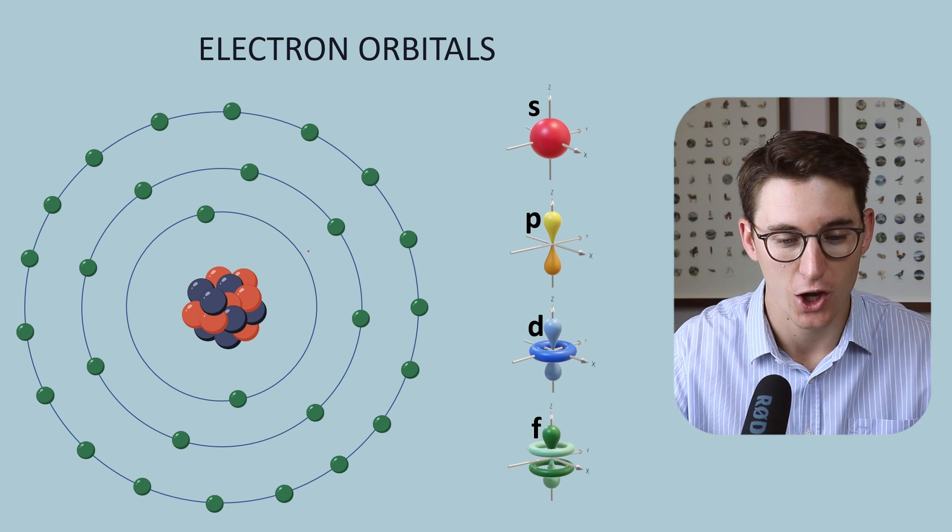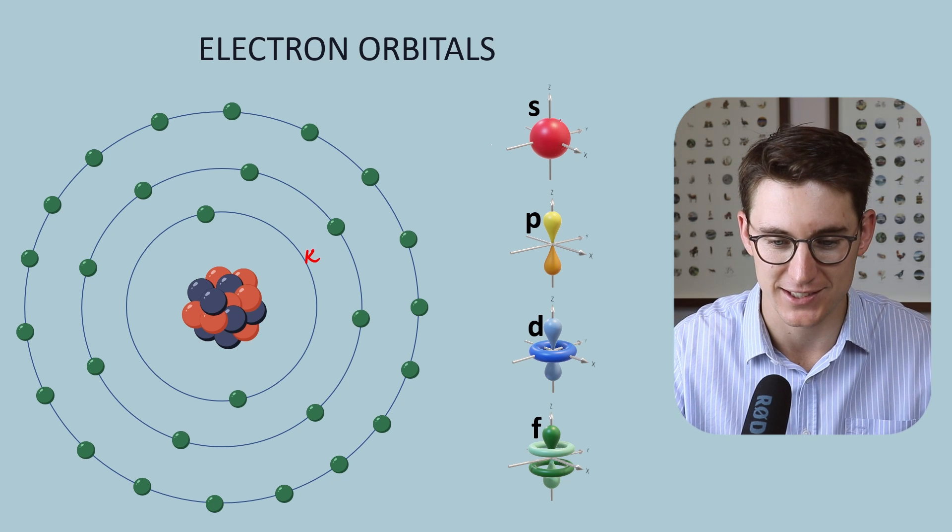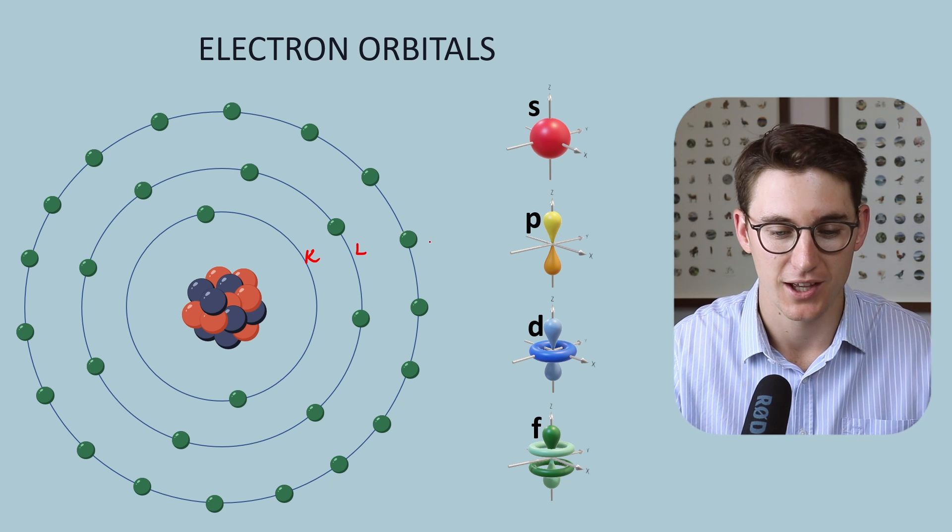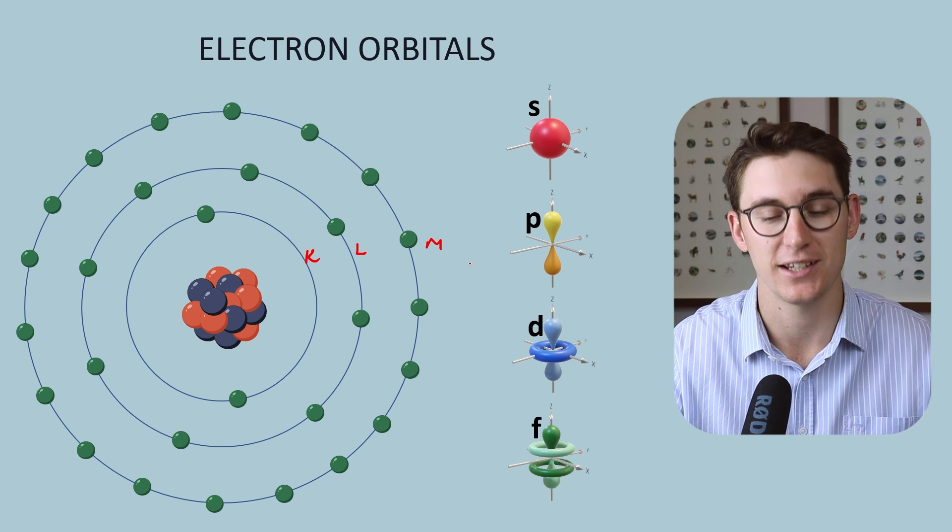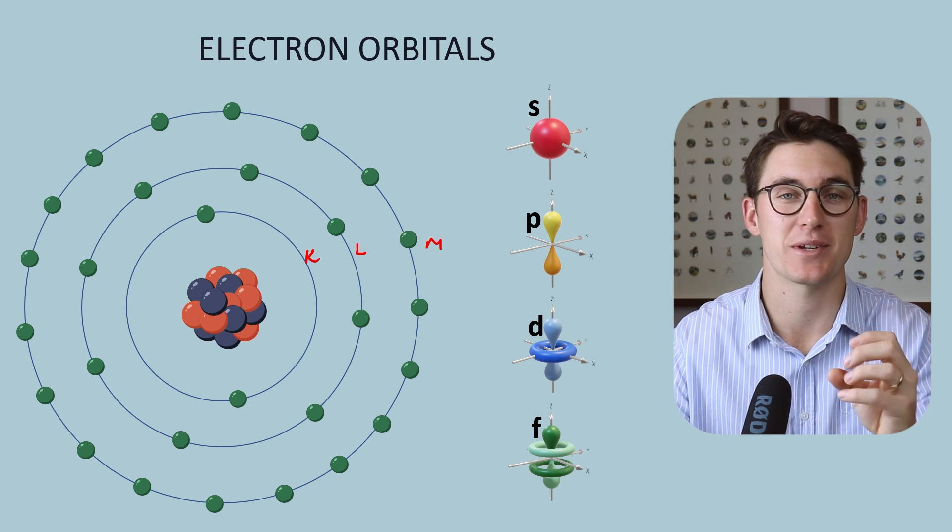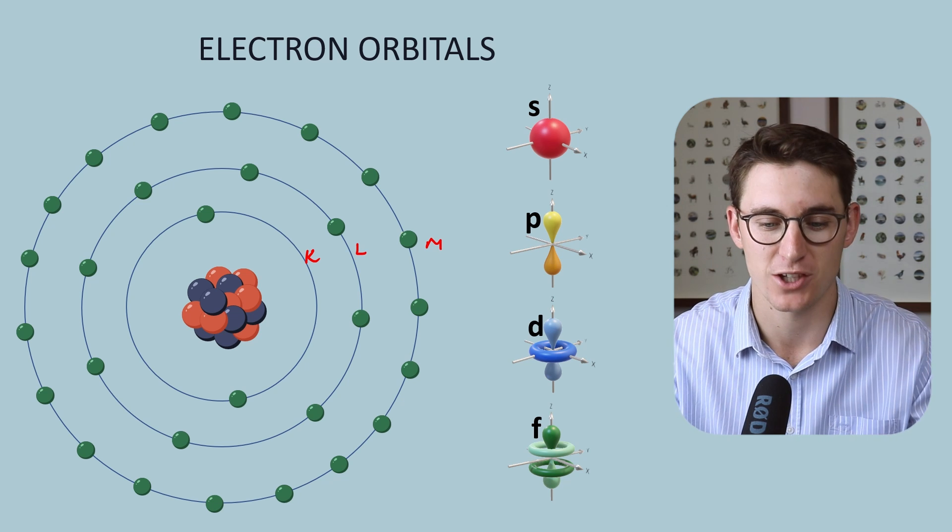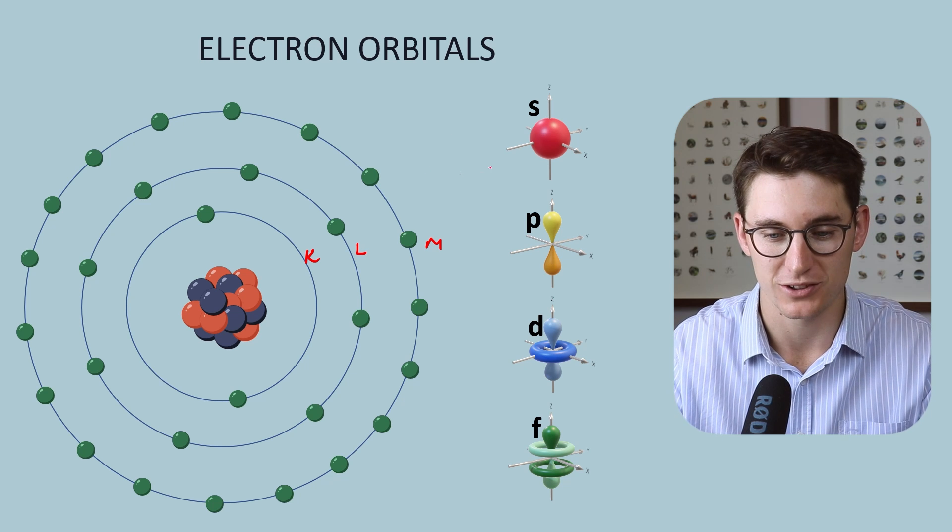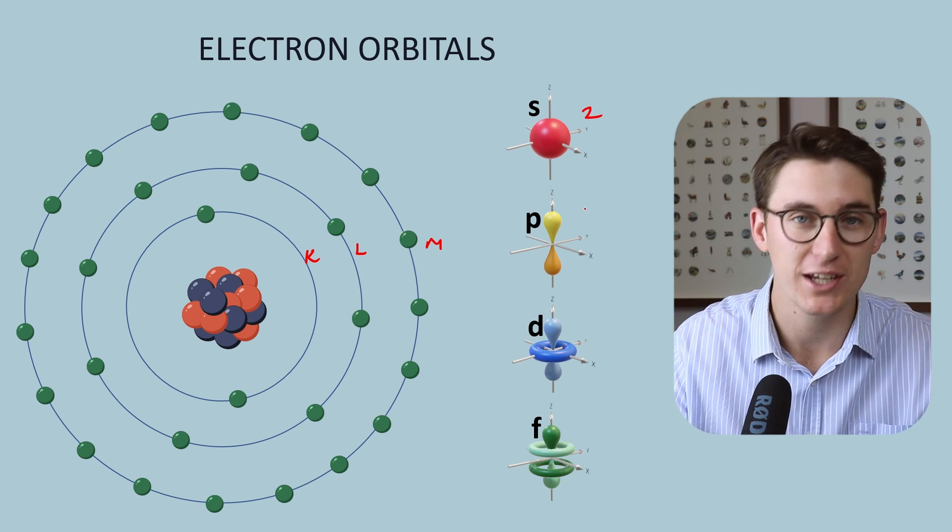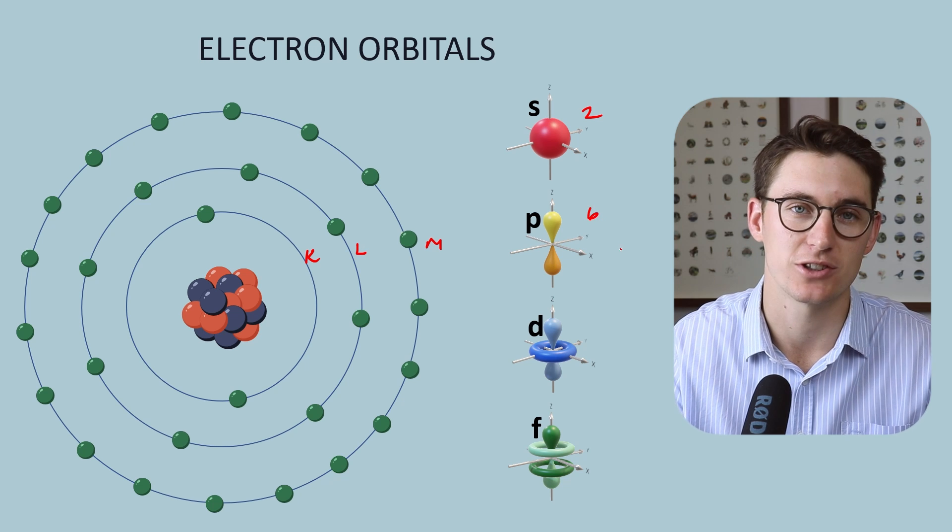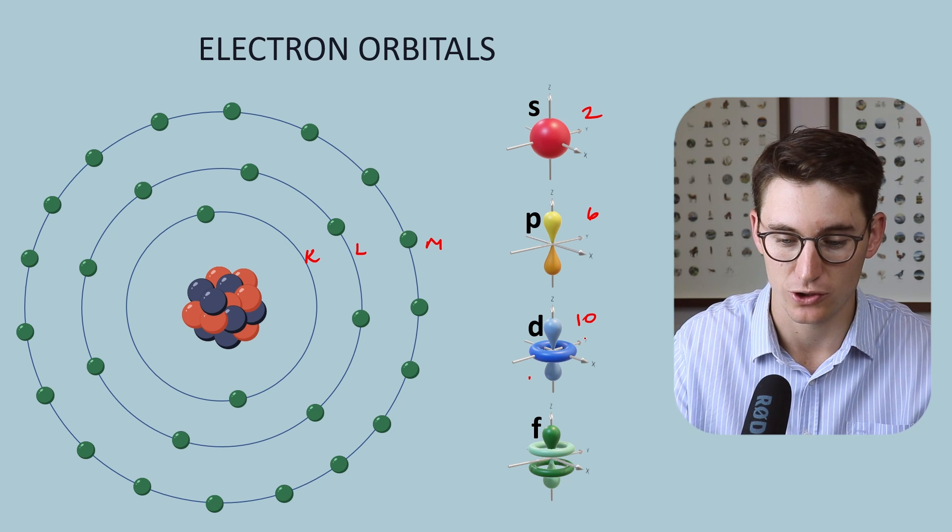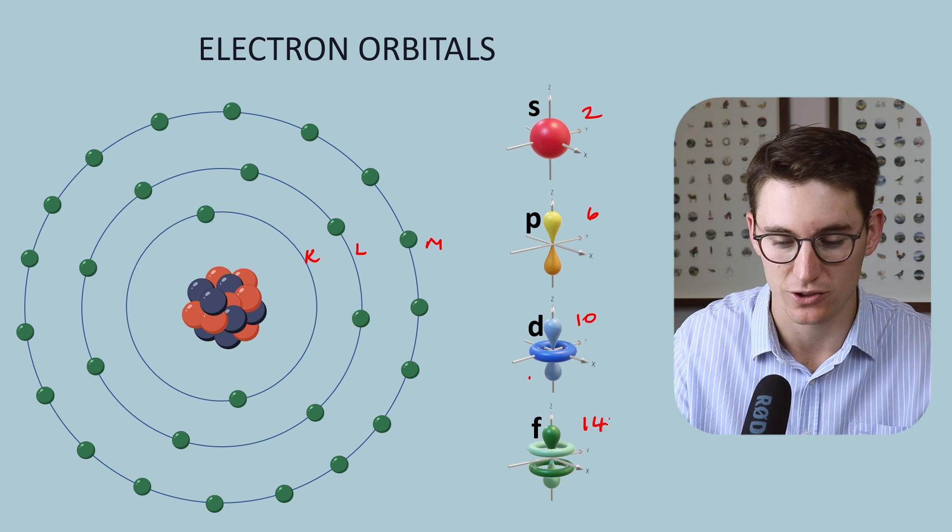As we start at our K shell here, we have only one type of orbital and that is our s orbital. Moving on to the L shell, we have both an s orbital and a p orbital. Our M shell has an s, a p, and a d. As we extend further out, we add these orbitals in. Now each of these orbitals can house a specific number of electrons. Electrons will always come in pairs within these orbitals. So our s orbital can hold one electron pair, so two electrons in total. Our p orbital can hold three electron pairs or six electrons in total. Our d orbital can hold five electron pairs, that is 10 electrons in total. And our f is seven electron pairs or 14 electrons in total.